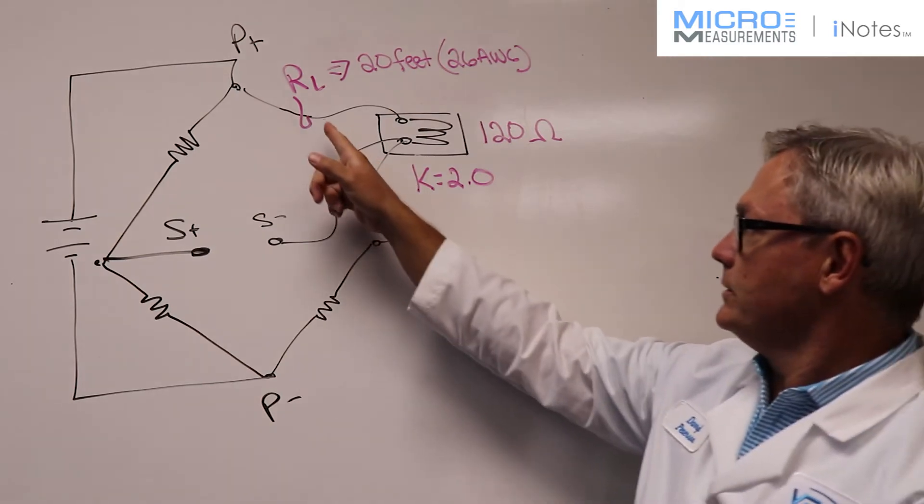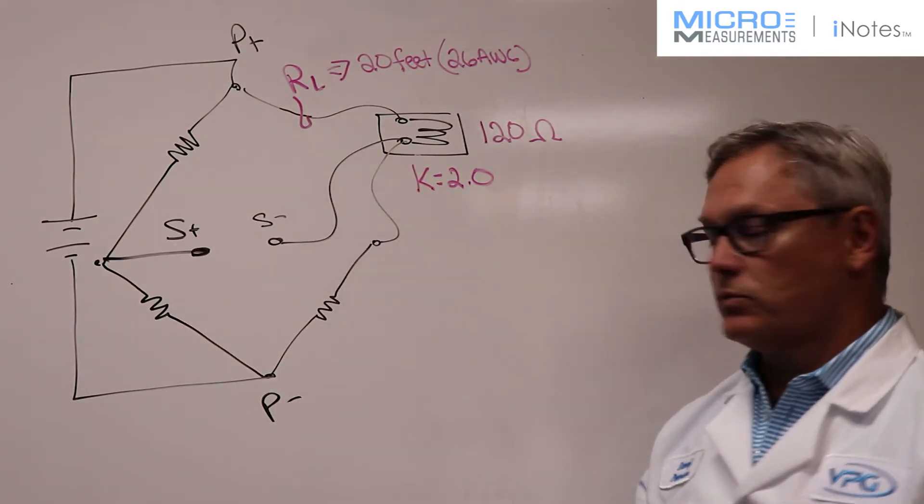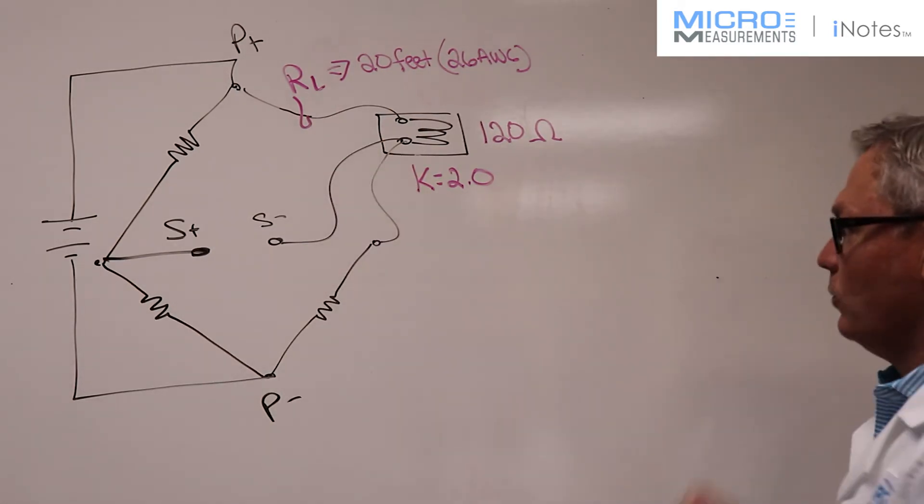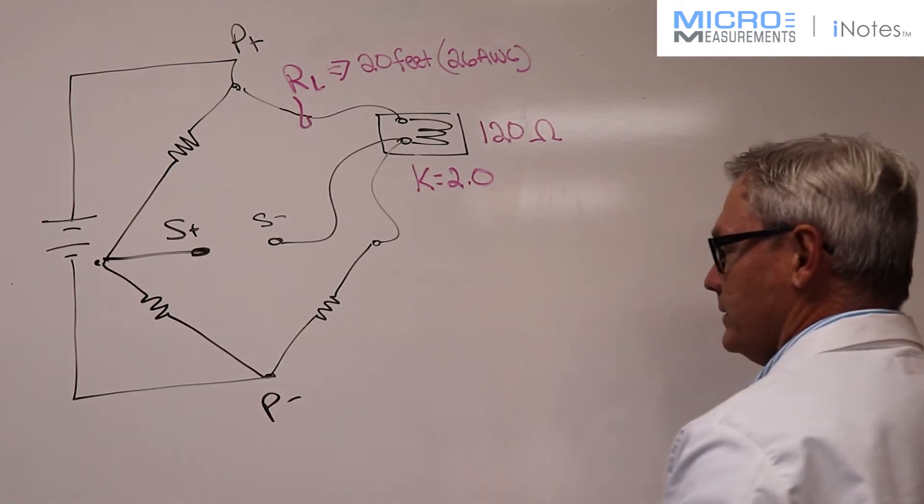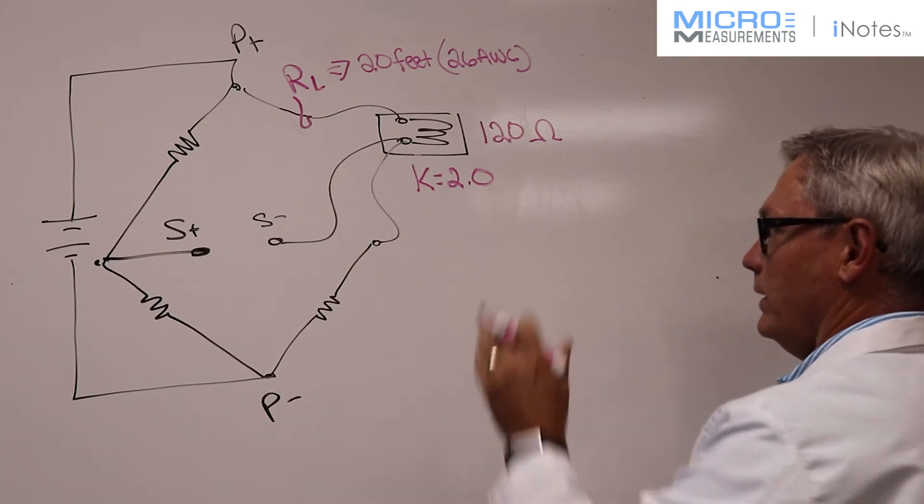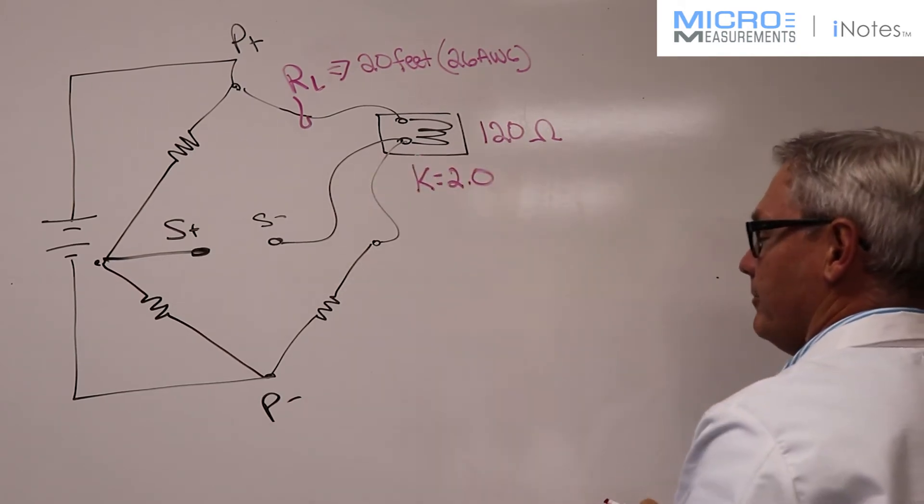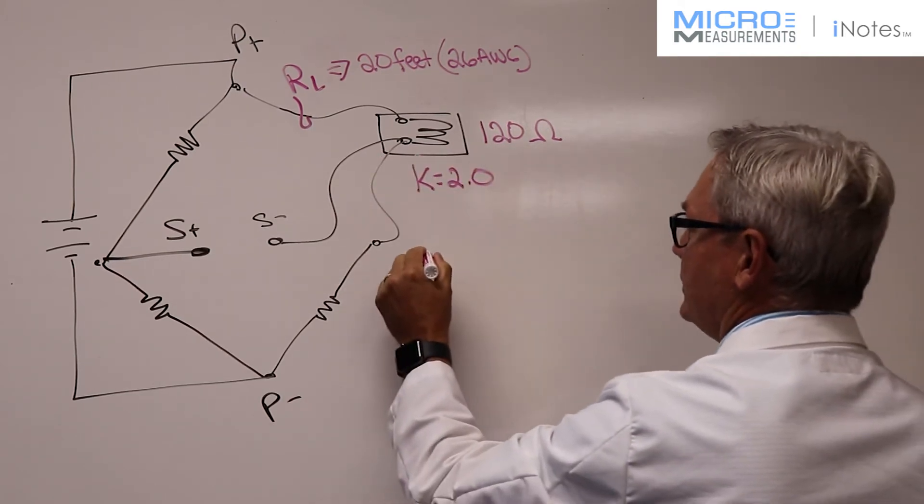Now the goal of this is to calculate the influence of this wire and to correct for it. In order for us to do that, we're going to use the gauge factor equation that will account for the desensitization we get from that wire. And that equation looks like this.